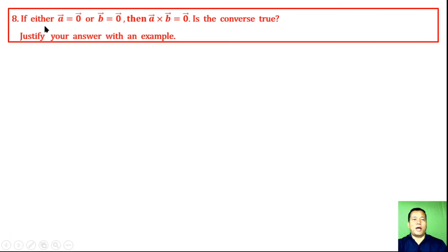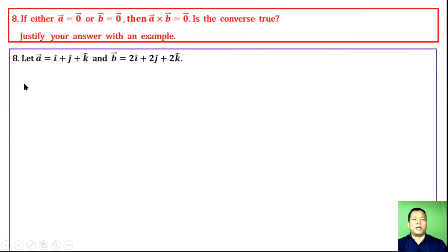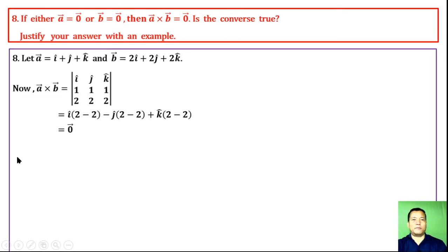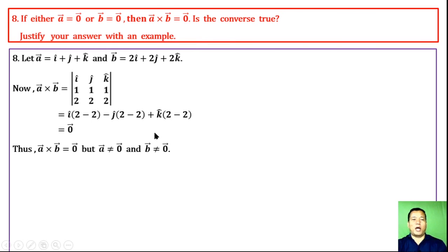Question 8: If either vector a = zero vector or vector b = zero vector, then a cross b = zero vector. Is the converse true? Let vector a = î + ĵ + k̂ and vector b = 2î + 2ĵ + 2k̂. Computing a cross b via the determinant gives zero vector. Thus a cross b = zero vector, but vector a ≠ zero and vector b ≠ zero. Hence the converse is not true.